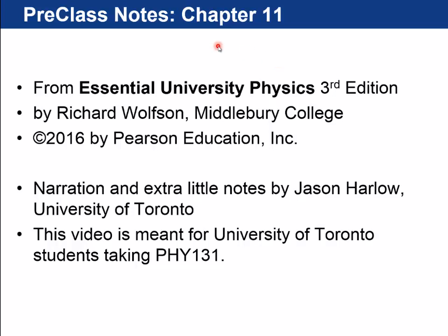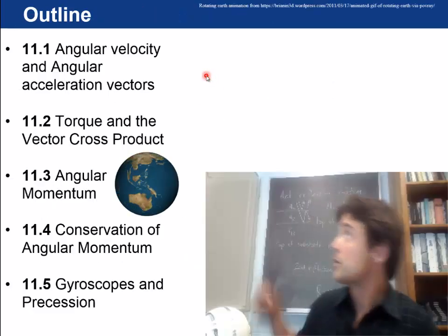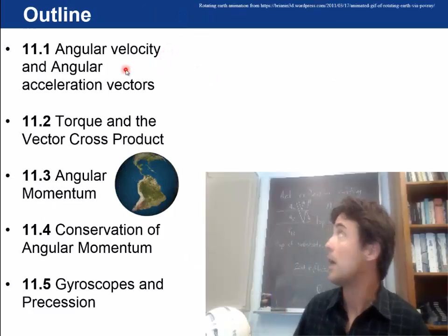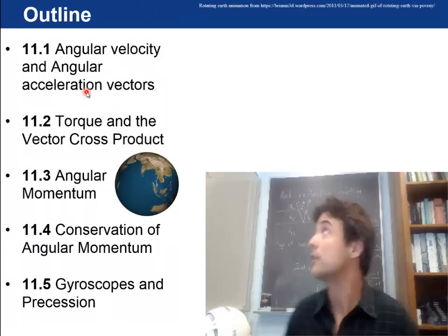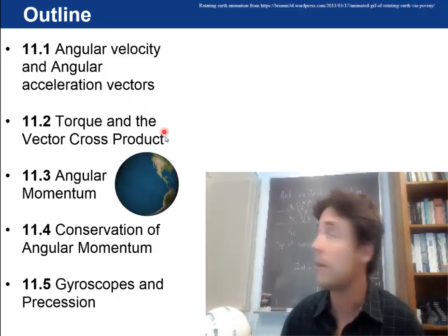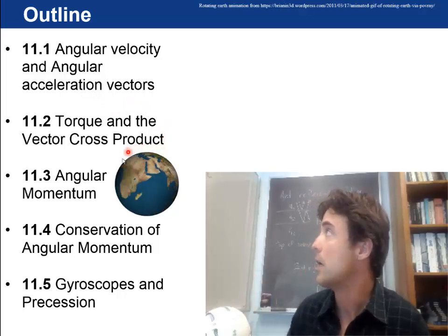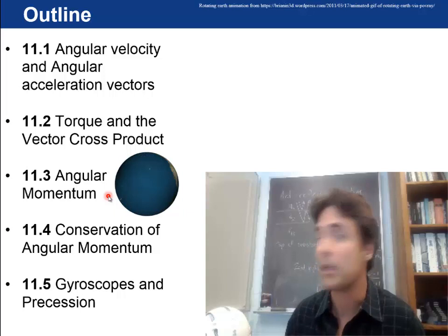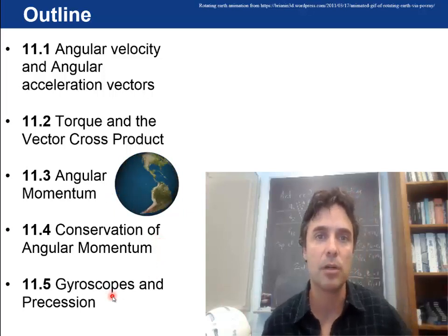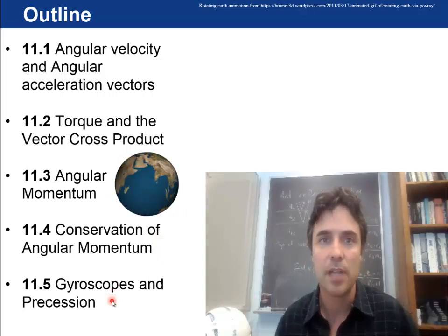Hi there, I'm Jason Harlow. This video will go over chapter 11 of Wolfson. The sections are angular velocity and angular acceleration vectors, torque and the vector cross product, angular momentum and conservation of angular momentum, and we'll end up the chapter on gyroscopes and precession.